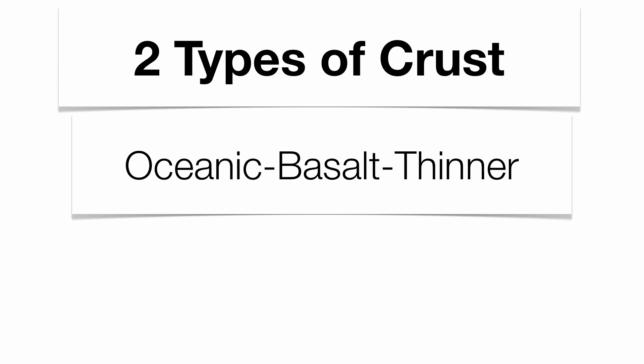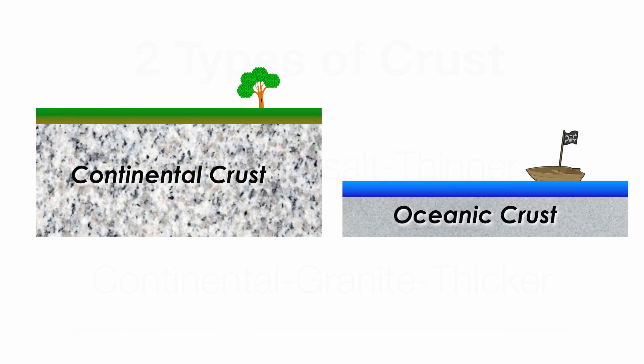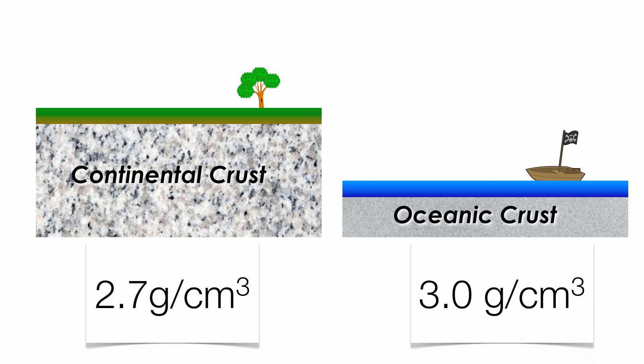There are two different parts of the crust: oceanic and continental. Oceanic crust is made up of basalt and is a little bit thinner. Continental crust is made up of granite and is a little bit thicker, very simply because there are more mountain ranges on the continents. There's also a density difference — continental crust is a little bit less dense, and oceanic crust is a little bit more dense. That's going to be important when we start talking about plate tectonics next chapter.